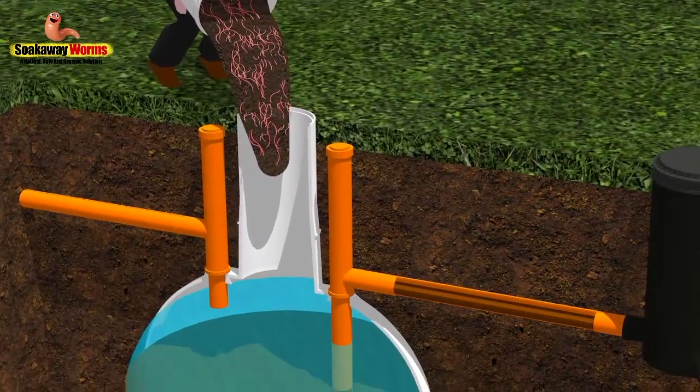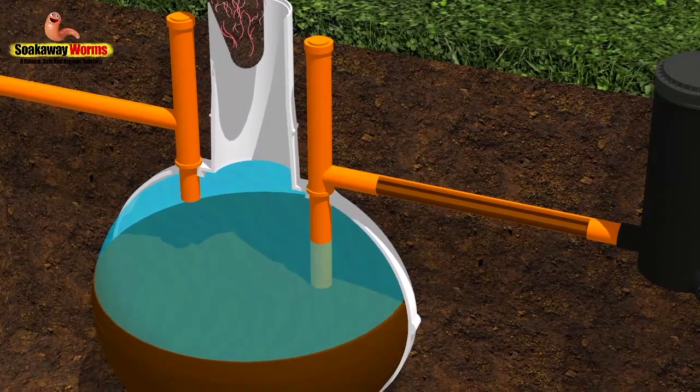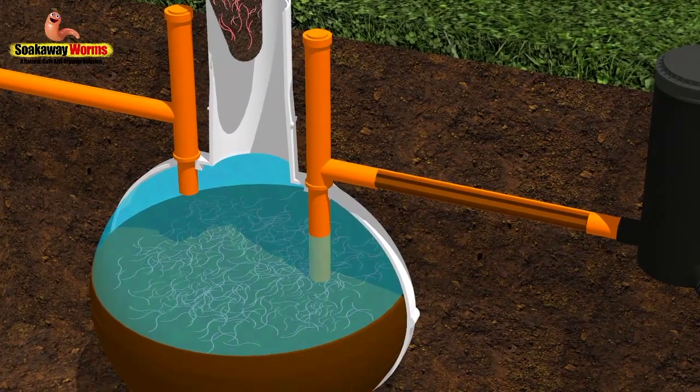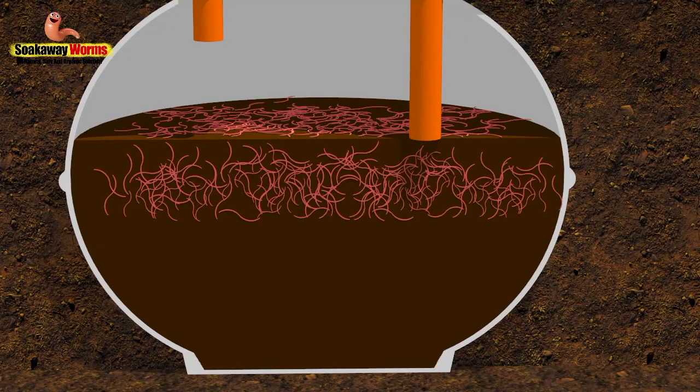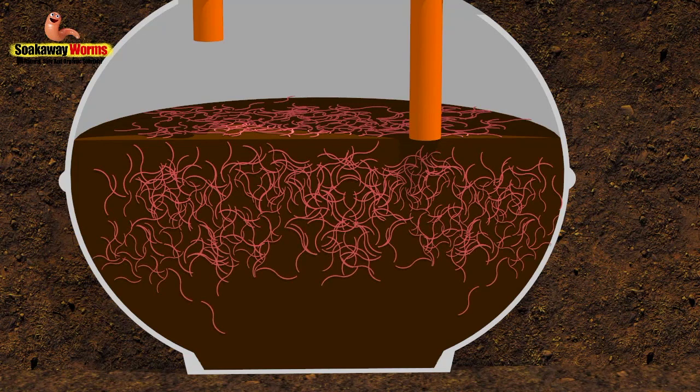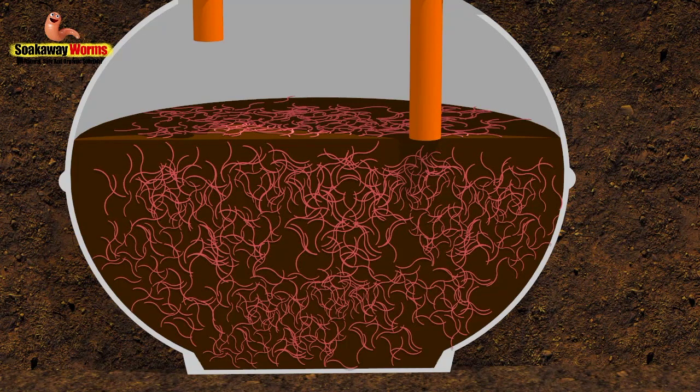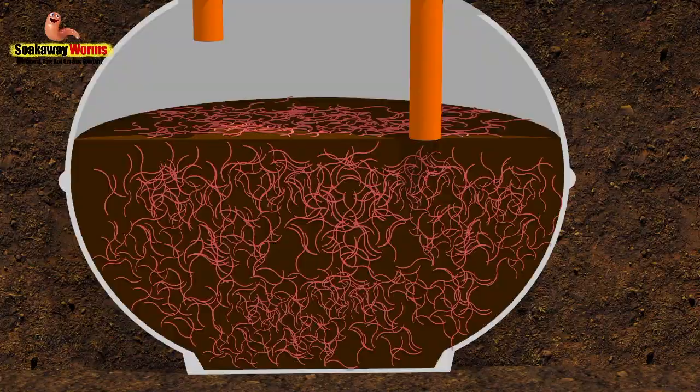The worms will then sink to the bottom of the tank landing on top of the sludge and very quickly, these worms will adjust to their new surroundings and will start burrowing and working their way into the fat and the grease and the sludge. And they'll start breeding and multiplying.